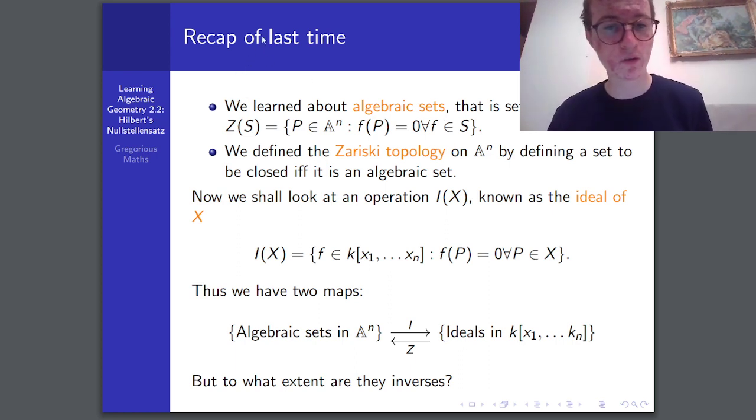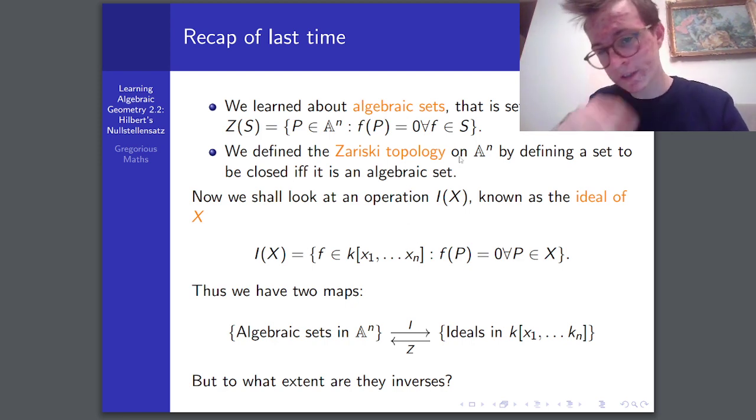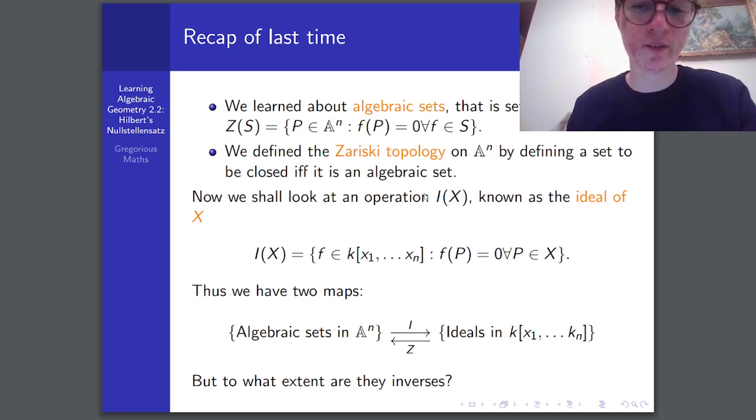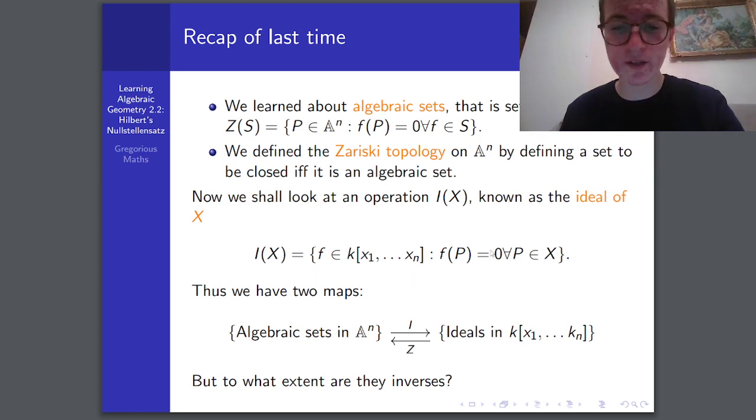And we want to see to what extent these two are inverses. Last time we looked at algebraic sets, and we defined the Zariski topology on affine n-space. And now we'll look at an operation called the ideal of x, which takes a subset of affine n-space, and it spits out the set of functions such that they vanish for all points in x.